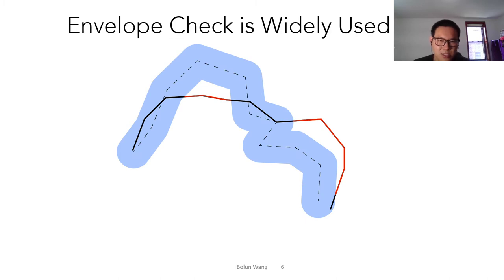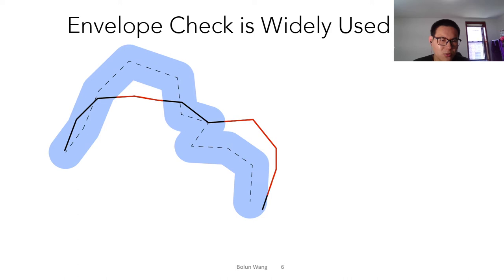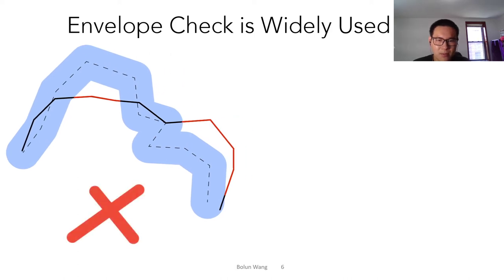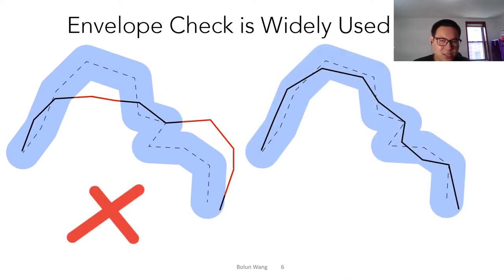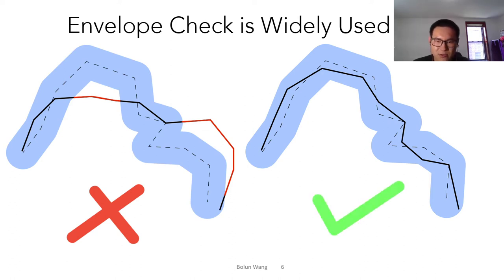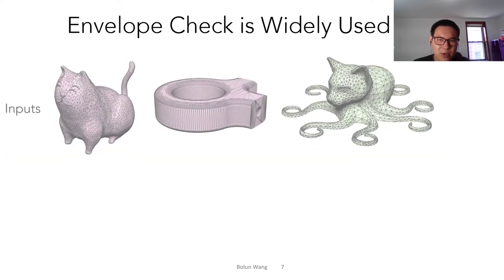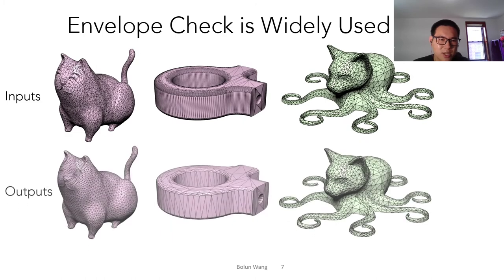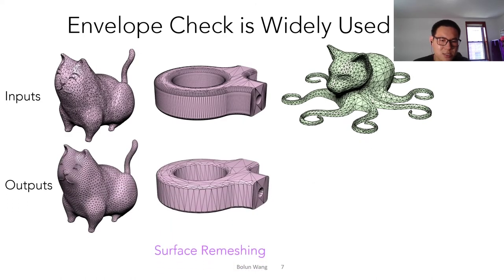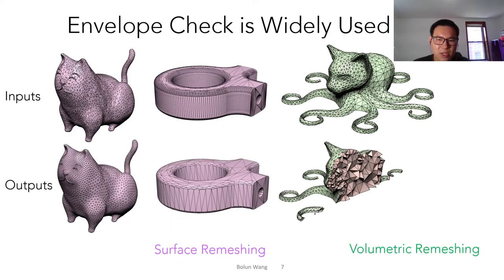For this case, the right parts are outside of the envelope, so we don't want to accept it. For the other case, the remesh result is inside of the envelope, so we can see that this is a good approximation of the input surface. Envelope check is widely used in remeshing algorithms such as surface remeshing and volumetric remeshing.